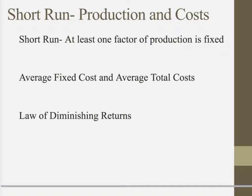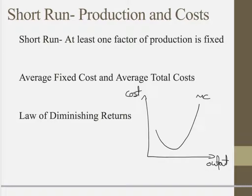With short run cost theory it's a similar idea: if you're producing less due to the law of diminishing returns, your average variable costs will increase, because with each unit you output it's actually costing you more as you have to provide more labour. Therefore your average total costs will increase and your marginal cost curve will look like this. Initially your costs start to fall as your workers become more productive. However, when the law of diminishing returns sets in — as you're adding variable factors to fixed factors — your workers become less marginally productive and your marginal cost, your cost per unit of output, will increase as well. That's why the marginal cost curve is shaped like this.